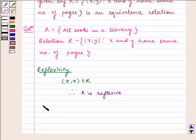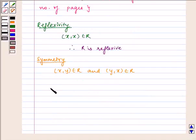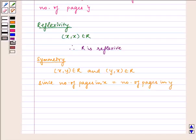Let us check for symmetry. We have (x,y) belongs to R and (y,x) belongs to R, since number of pages in x equals number of pages in y. Therefore, R is symmetric.